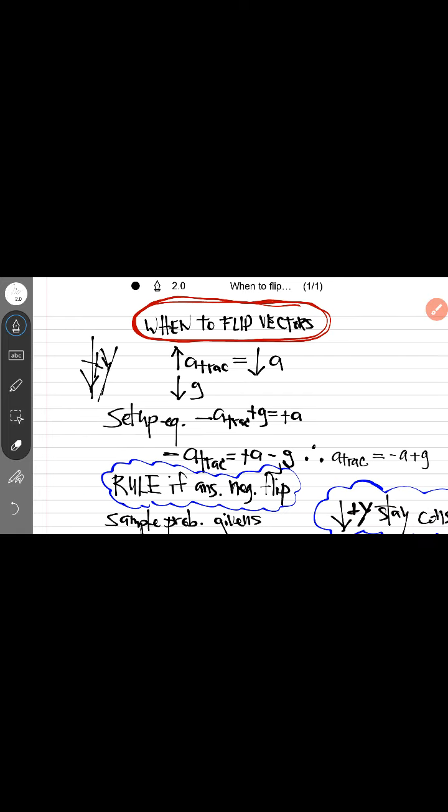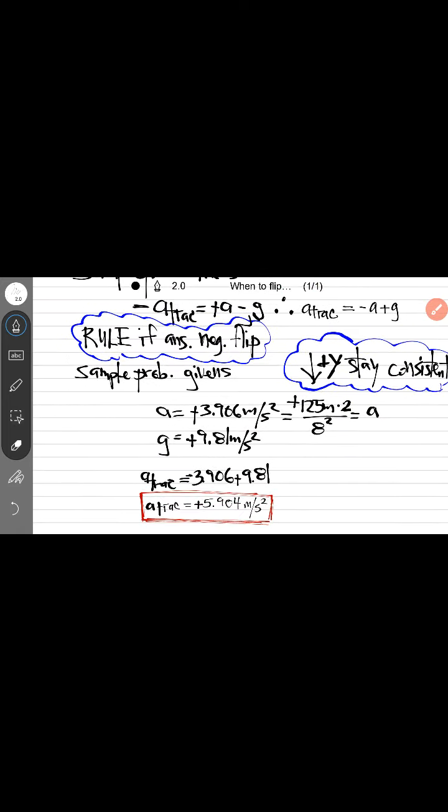There you go. Go here. The sample problem that I did before: the givens are acceleration because he fell 125 meters in the downward direction, so that was positive. Stay consistent. The other problem, we defined down as positive, so we defined down as positive in this context.